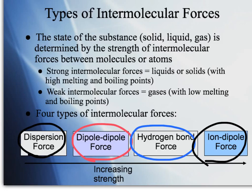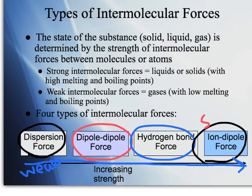As we go from left to right, we increase the strength of the forces. The dispersion forces are the weakest, and the ion-dipole is the strongest. Let's take a look at each in their own section.